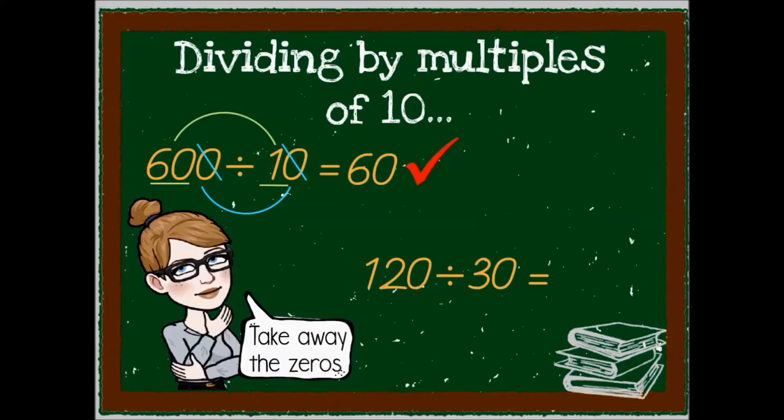Next one, 120 divided by 30. Let's cancel out a zero on each side. What we are left with is 12 divided by 3. So 12 divided by 3 gives me 4.